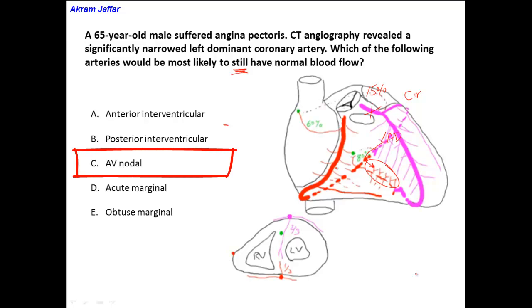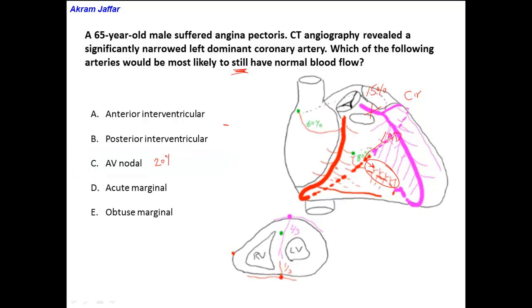Option C: the AV nodal artery. In 80% of cases it is a branch of the right coronary artery, but in 20% of cases it is a branch of the left coronary artery — so it can be affected, but to a lesser extent than options A and B. Option A is definitely wrong, option B is definitely wrong, and we can still consider option C.